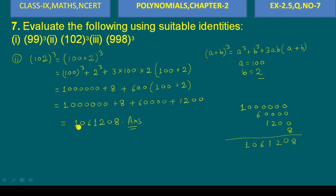That gives us 1,000,000 plus 8 plus 3 × 2 × 600 × (100 + 2). Calculating: 1,000,000 plus 8 plus 61,200 equals 1,061,208. This is the answer. Dear friends, if you like this video please subscribe, like and share. Thank you for watching.